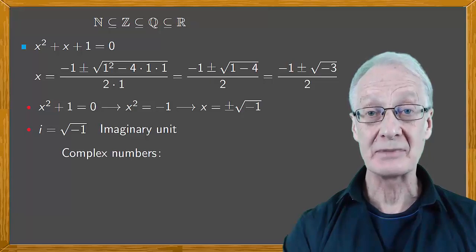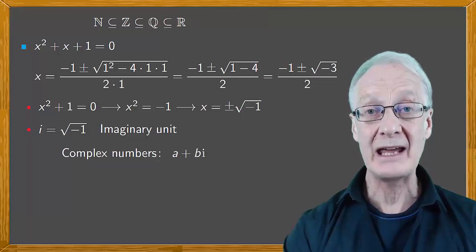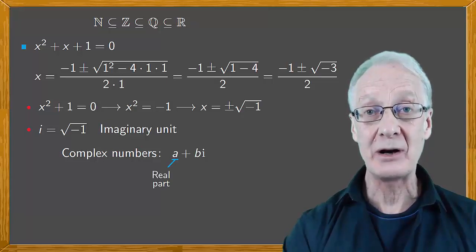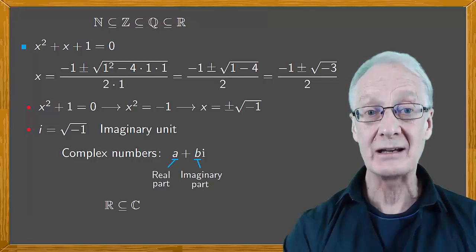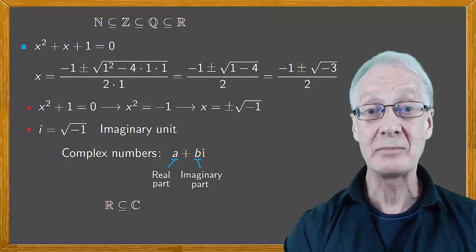Complex numbers are defined as those of the form a plus bi, where a and b are real, and a is said to be the real part, and b the imaginary part. Real numbers are contained within the set of complex numbers, since they're complex numbers whose imaginary part is 0.